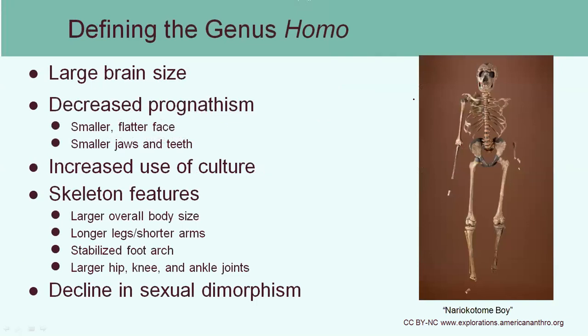So what allows you to determine if a skeleton belongs in the genus Homo? The main criteria is brain size, and you're going to see that brain size continues to get larger and larger the closer you are in evolution to modern Homo sapiens. All members of genus Homo have much larger brains than those of the Australopithecines, which are closer in size to other apes. We also see a decrease in prognathism, so the jaw is going to get reduced, the teeth are going to be smaller in size over time, and this reduction in jaw and teeth continues and makes the face look flatter.